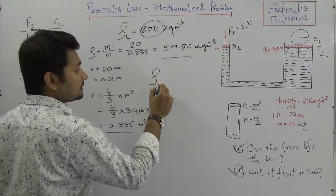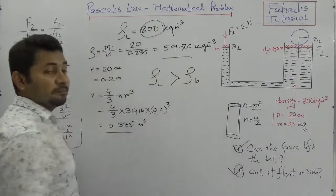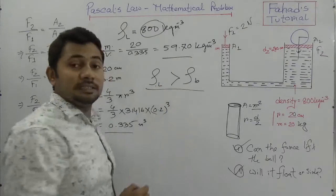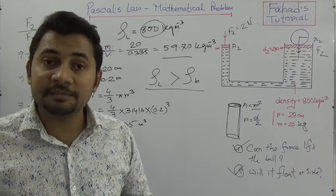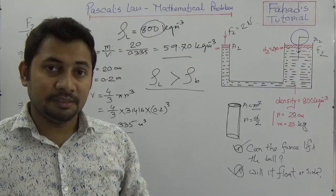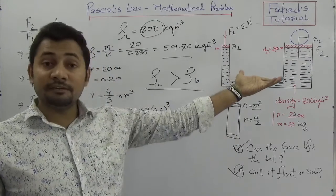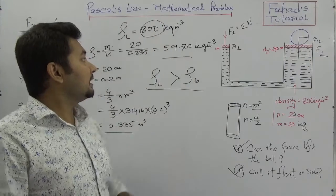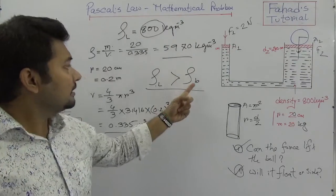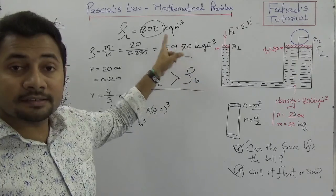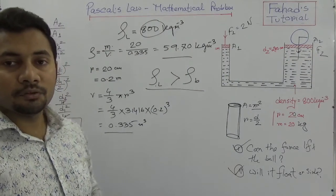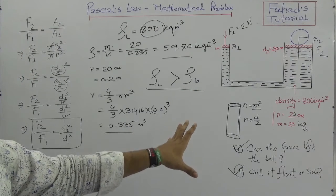The density of the ball is 59.70 kg/m³, whereas the density of the liquid is 800 kg/m³. Since the density of the liquid is much greater than the density of the ball, the ball will float — it will never sink. According to Archimedes' law, if the liquid density is higher than the object's density, the object floats. If the ball's density were 5970 kg/m³, it would sink, but at 59.70 kg/m³ it will definitely float.